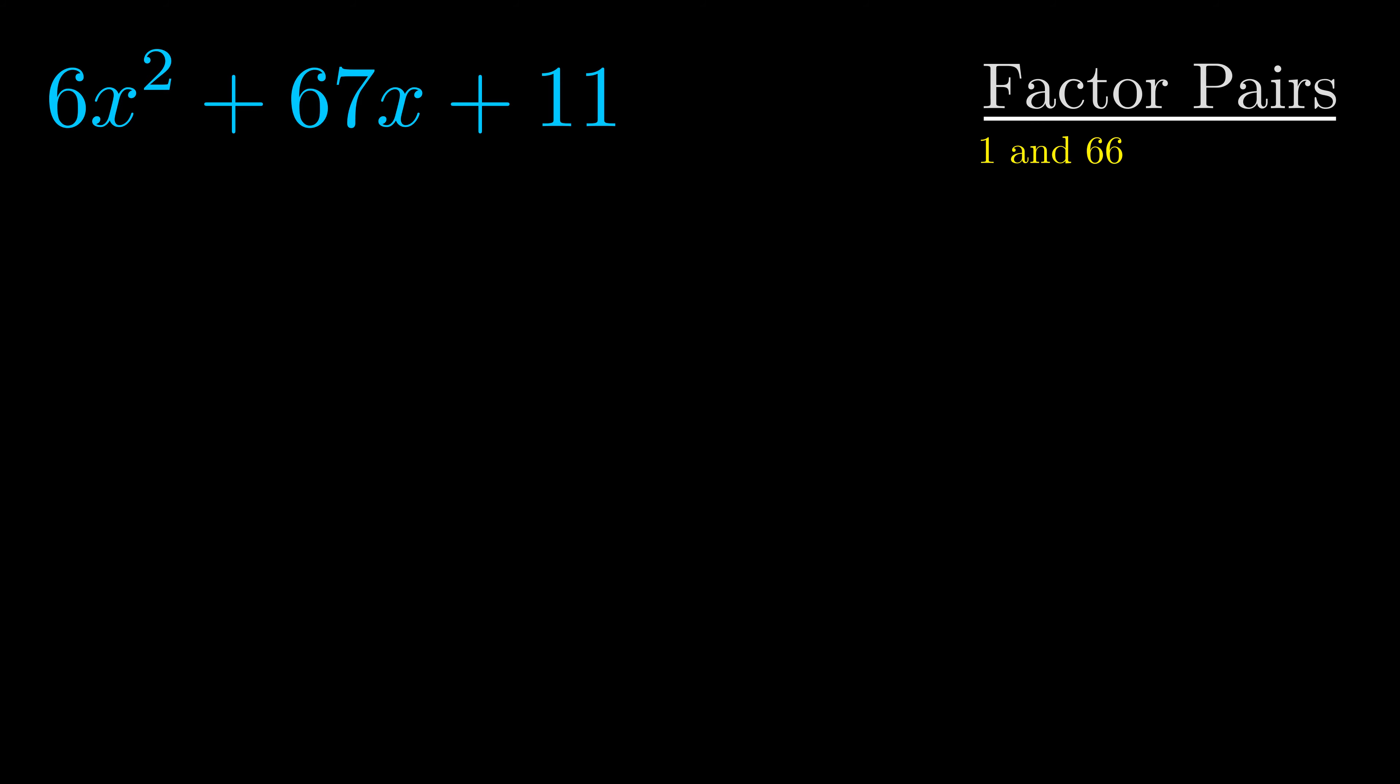Now once we have this factor pair, what we want to do is use it to split up the b value.